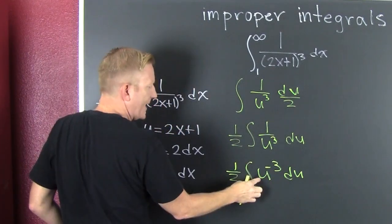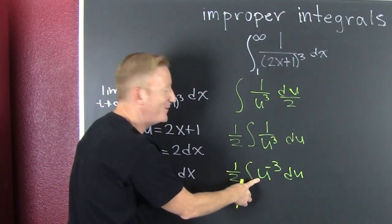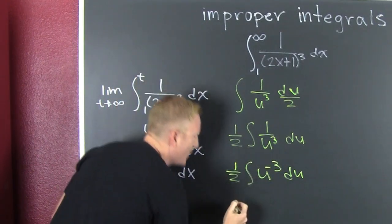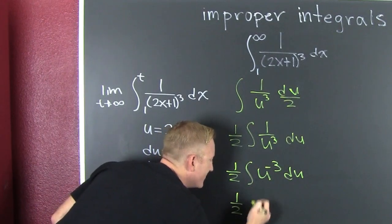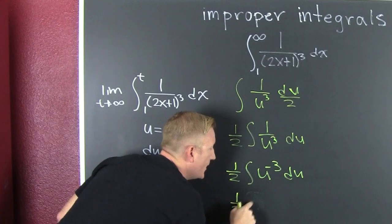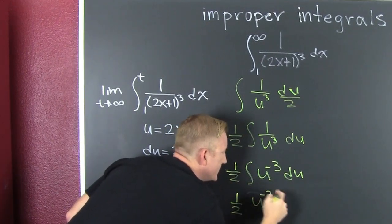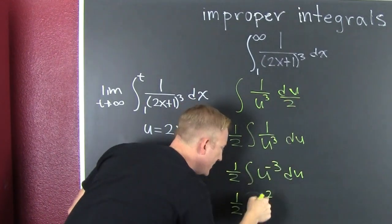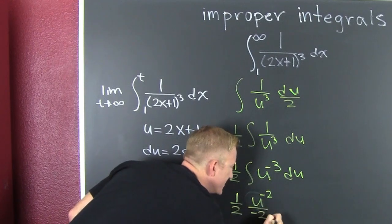Well, we know how to integrate that. That's the power rule. Add one, divide by it. So this is one half u to the minus 2, because minus 3 plus 1 is minus 2 divided by a minus 2.